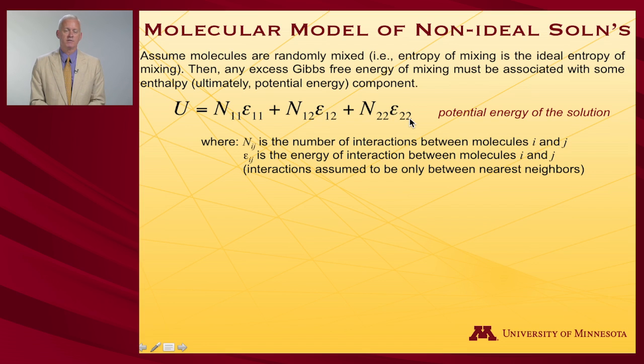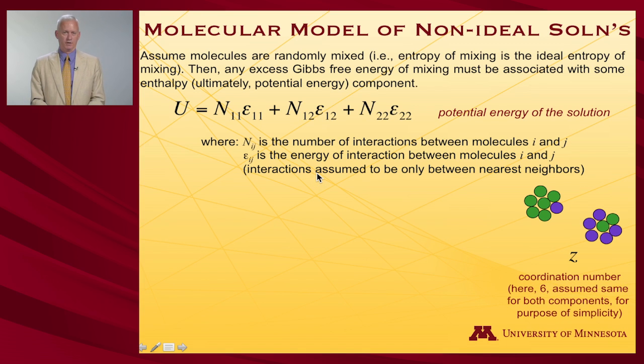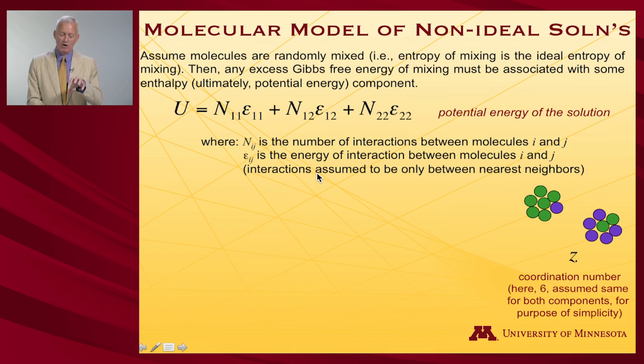And finally, there's a cross term, N₁₂ε₁₂. So how many 12 interactions are there, and what's their energy? We're going to assume that interactions only happen between nearest neighbors. So these are molecules that are touching one another. And just to make life a little easier, let's assume all molecules are perfect spheres in two dimensions. So it turns out that I have a coordination number, Z I'll call the coordination number, that tells me exactly how many contacts I have about any given molecule. It's six in this particular example.